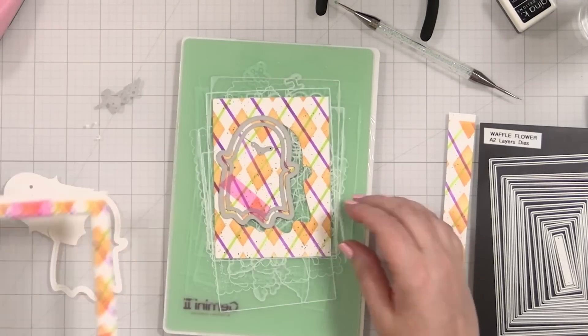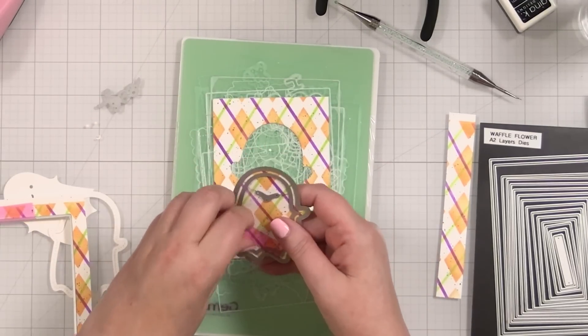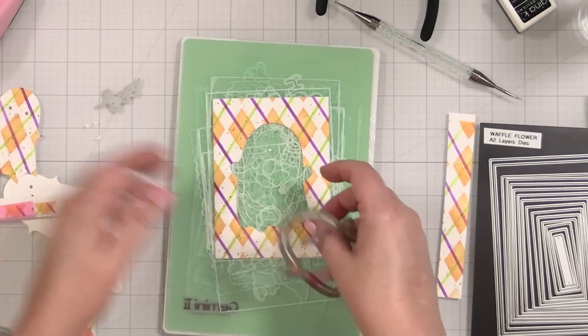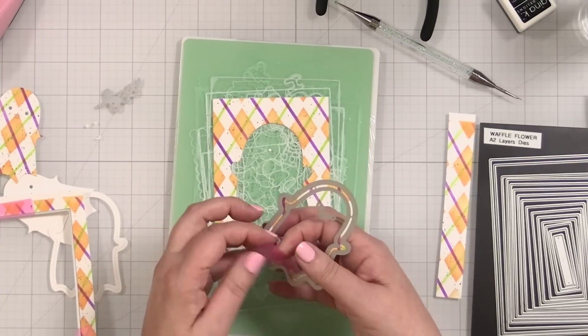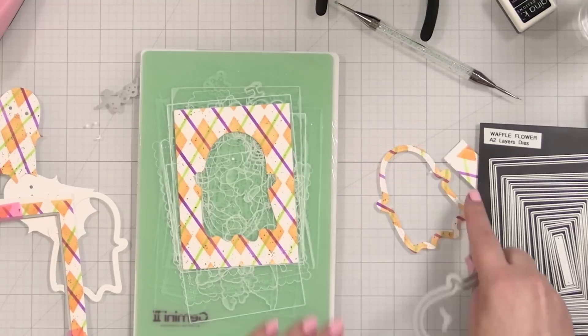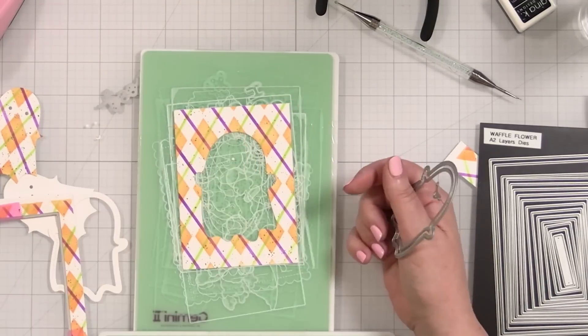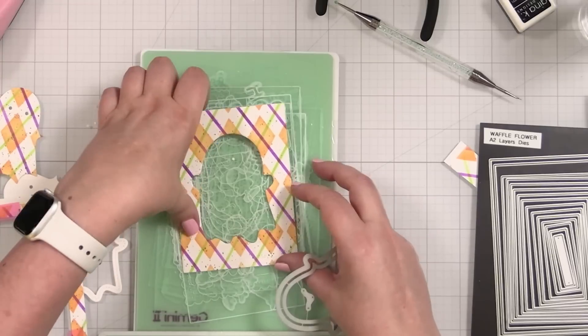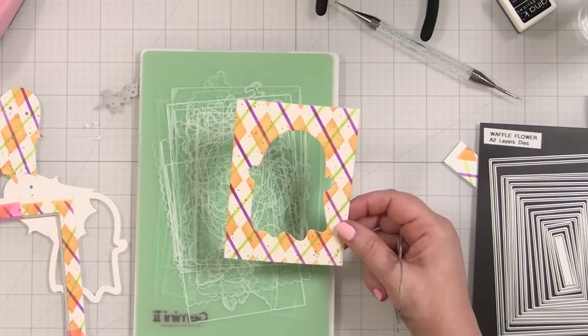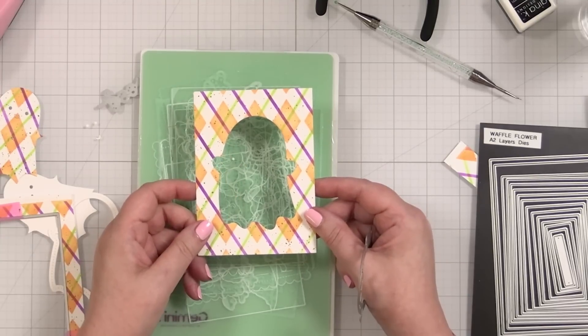Let's take a look at my panel. And then I also have a little plaid ghost that I can keep and use. I'm going to set that aside for now. So this is the start of my shaker. Let me get some acetate on this so that I can start building the shaker element.